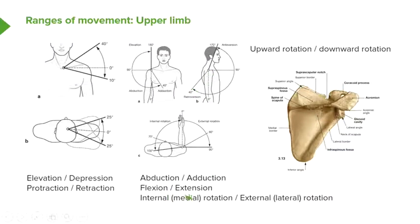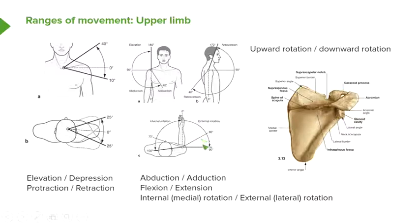We also have what's known as internal or medial rotation and external or lateral rotation. Internal or medial rotation is where the upper limb, again at the glenohumeral joint, is going to move in this direction. And then external rotation is when it's going to move outwards. We can see the limits of the movements here — external rotation and internal rotation — these are important movements.